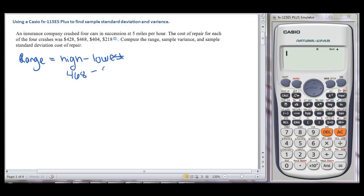and our low number is going to be that 218. So we go to our Casio, 468 minus 218 gives us 250. So for our range, we're going to get 250.